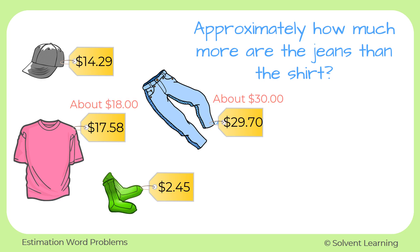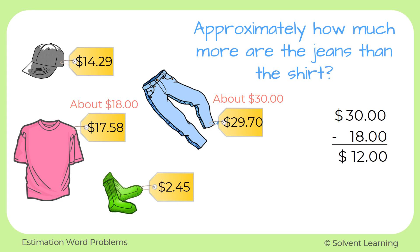Remember when we estimated those prices: the t-shirt was about $18 and the jeans were about $30. We want to find the difference in the prices, so we subtract. 30 minus 18 gives us $12, so we could say that the jeans are about $12 more than the shirt.